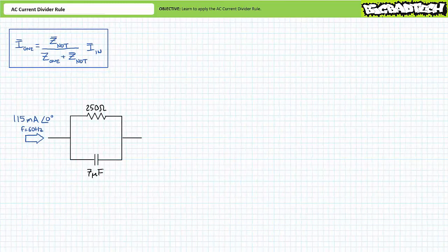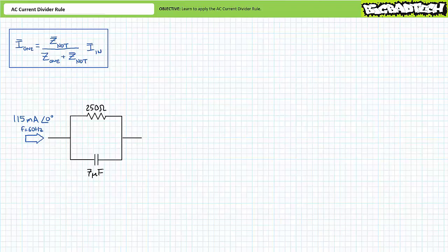As an illustrated example of the AC current divider rule, consider the following parallel AC circuit comprised of two elements. The first element is a 250 ohm resistor and the second element is a 7 microfarad capacitor. We know incoming current to be 115 milliamperes at an angle of zero, and the excitation frequency to be 60 hertz.